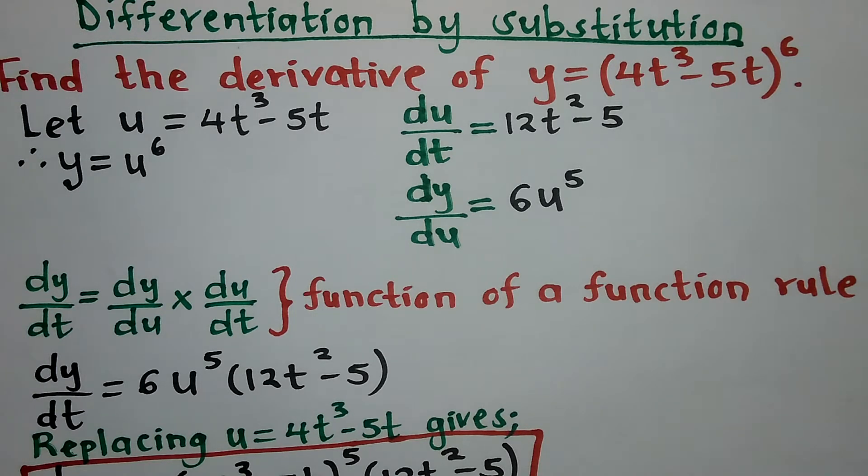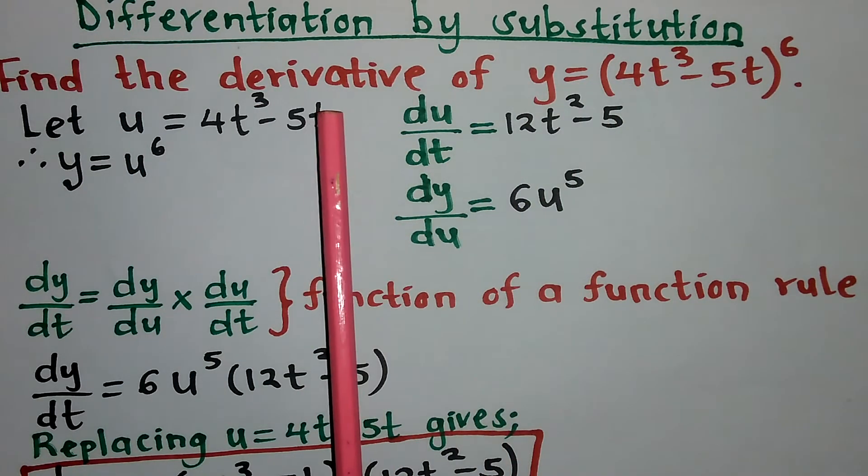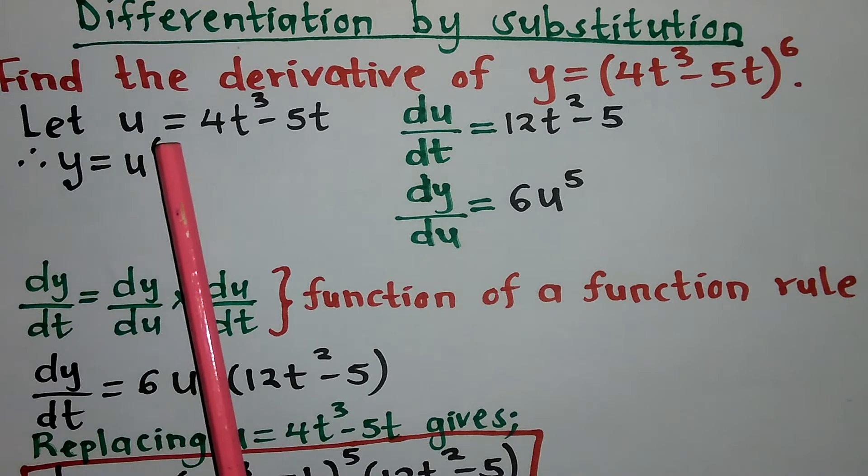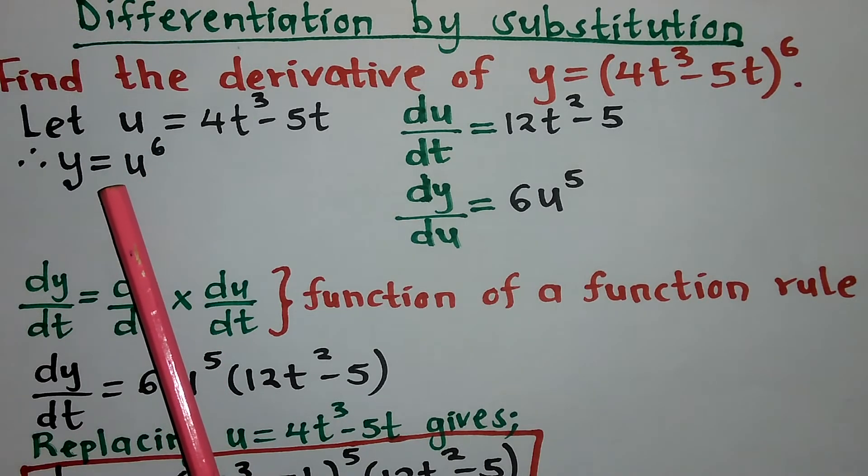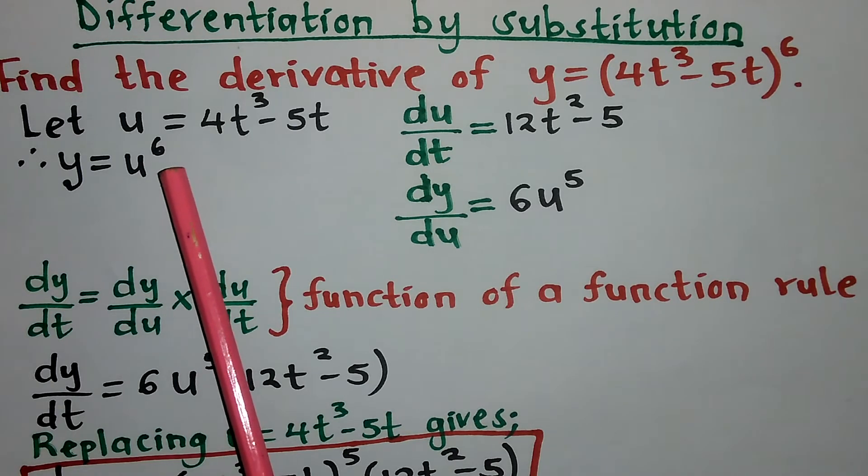So what you do is let the inside, which is 4t³ - 5t, be equivalent to u. Which means my function y is going to be written as u⁶.